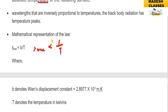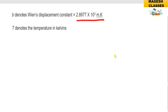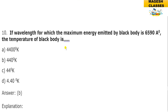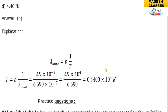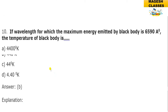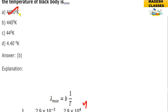Wien's constant b has the value 2.897 × 10⁻³ m·K. To find the temperature of a black body given lambda-max of 6590 Å: using lambda-max = b/T, with b = 2.9 × 10⁻³ m·K and lambda-max = 6590 Å = 6590 × 10⁻¹⁰ m, the calculation gives the answer as 0.44 × 10⁴ K, which is answer choice C.